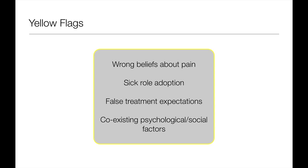In terms of the benign conditions that affect the spine, we've already mentioned that it's important with all of these to rule out red flags that may point to a more serious pathology. However, there's also a concept of yellow flags. These are a set of risk factors that determine a poorer prognosis for the patient in terms of rehabilitation. These include wrong beliefs about the nature of their pain, adoption of the sick role, false treatment expectations, and co-existent psychological and other social factors.